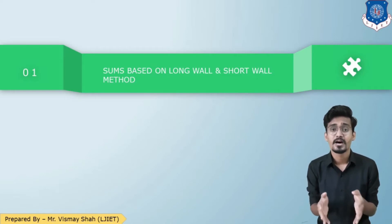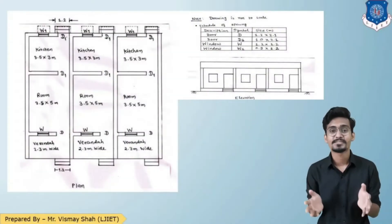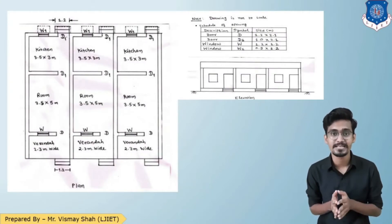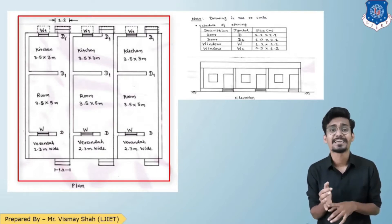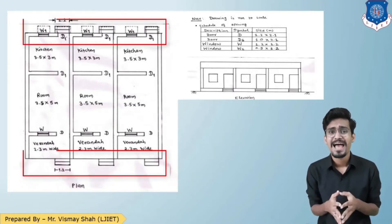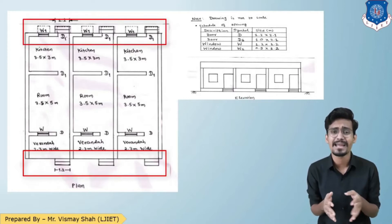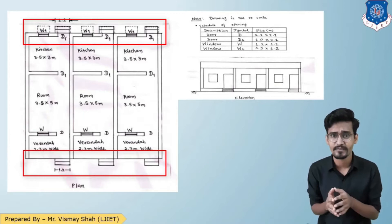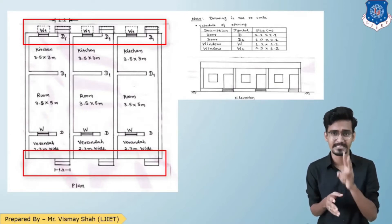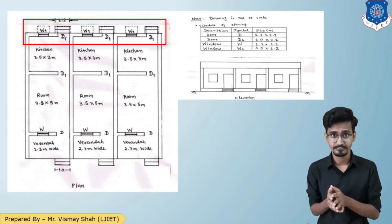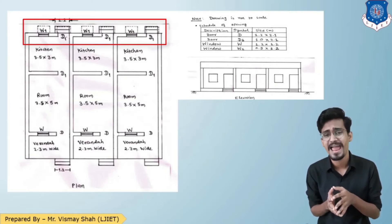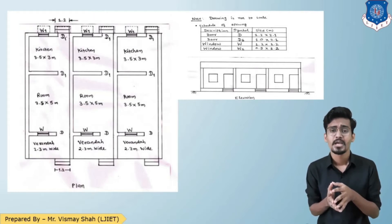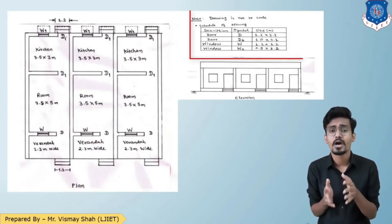Let us begin with the drawing. The plan and elevation are given here. This is the plan of a row house building. There are three row houses, each consisting of a veranda, room, and kitchen. Steps are provided at the front end and the back end of each row house, so there are six units of steps, and each unit consists of two steps.